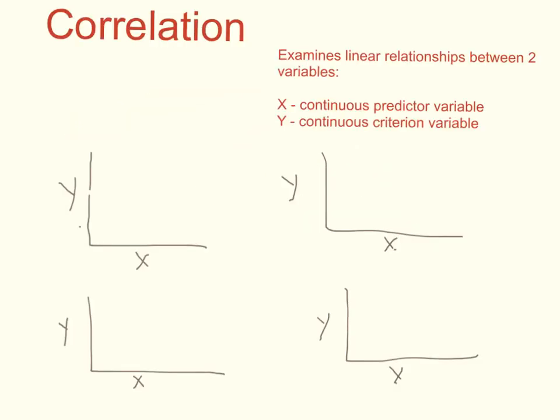Both correlation and regression deal with correlation. We have three or four options here. Correlation examines the linear relationships between two variables. That's it.